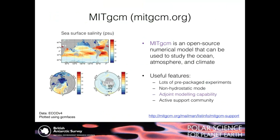MITGCM — the Massachusetts Institute of Technology General Circulation Model — is an open source numerical code used to study the ocean, atmosphere, and climate. You can use it to study the ocean by itself or the atmosphere by itself. Oceanography is a very common application, and you can find a lot of papers where people have used this setup for ocean modeling.